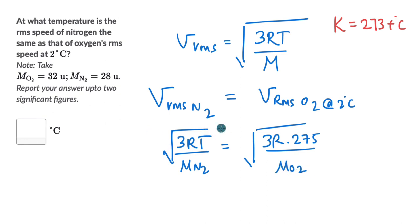Now we can remove the square roots of both sides and we can also cancel off 3R. So what remains is T divided by the molecular mass of nitrogen, that is 28. This is equal to 275 divided by the molecular mass of oxygen, that is 32.